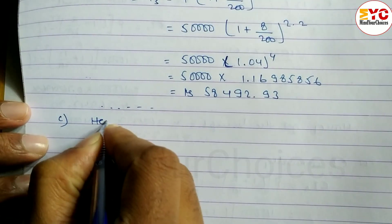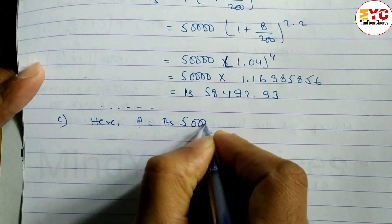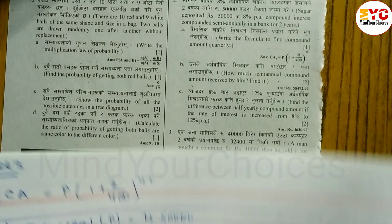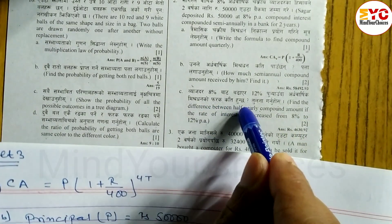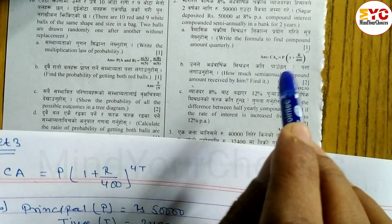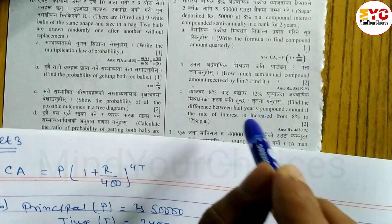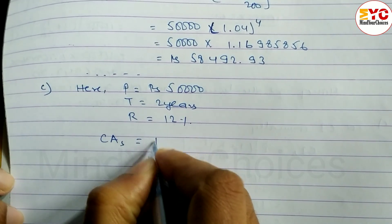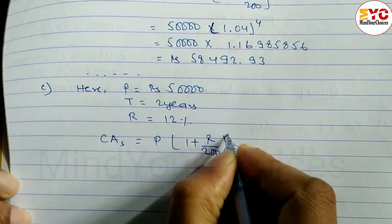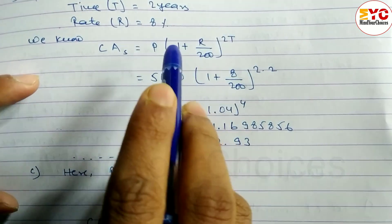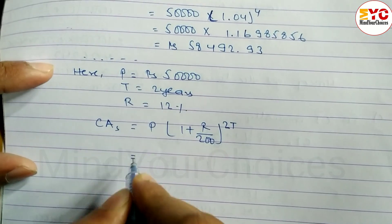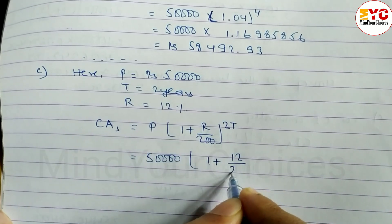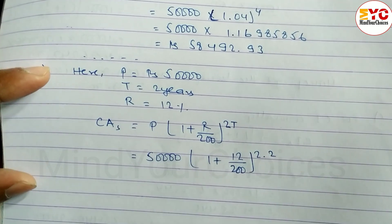Principal P remains the same: Rs. 50,000. Time T is equal to 2 years. Rate R is now 12%. Using the same semi-annual formula: CA = P times (1 plus R divided by 200) to the power 2T, with P = 50,000, R = 12%, and T = 2, giving power 4.